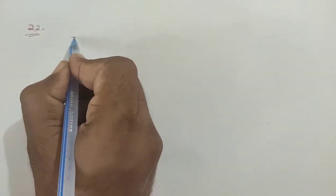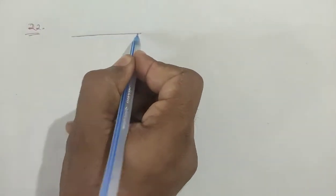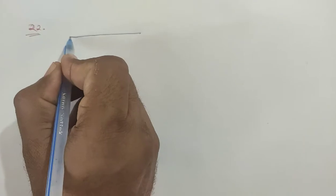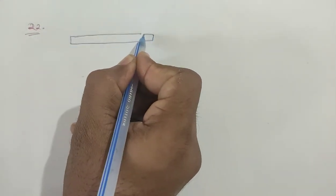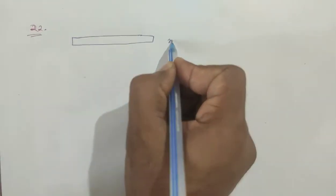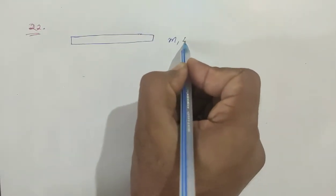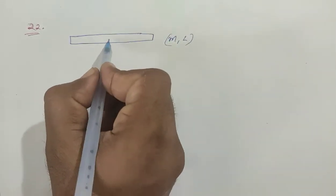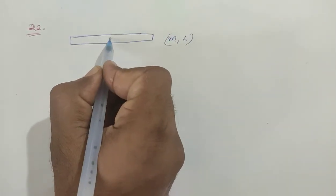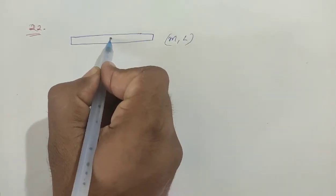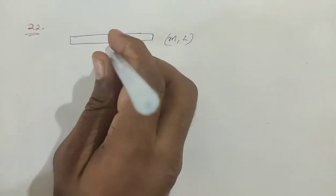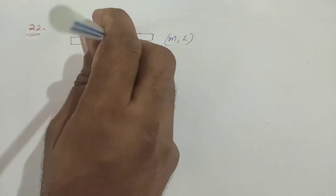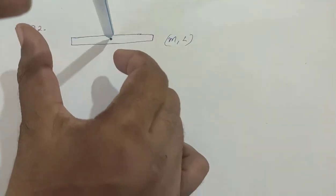Here is a rod given with mass m and length l. This is the center, about which it rotates — this point is fixed. If I put force here, then this will rotate.